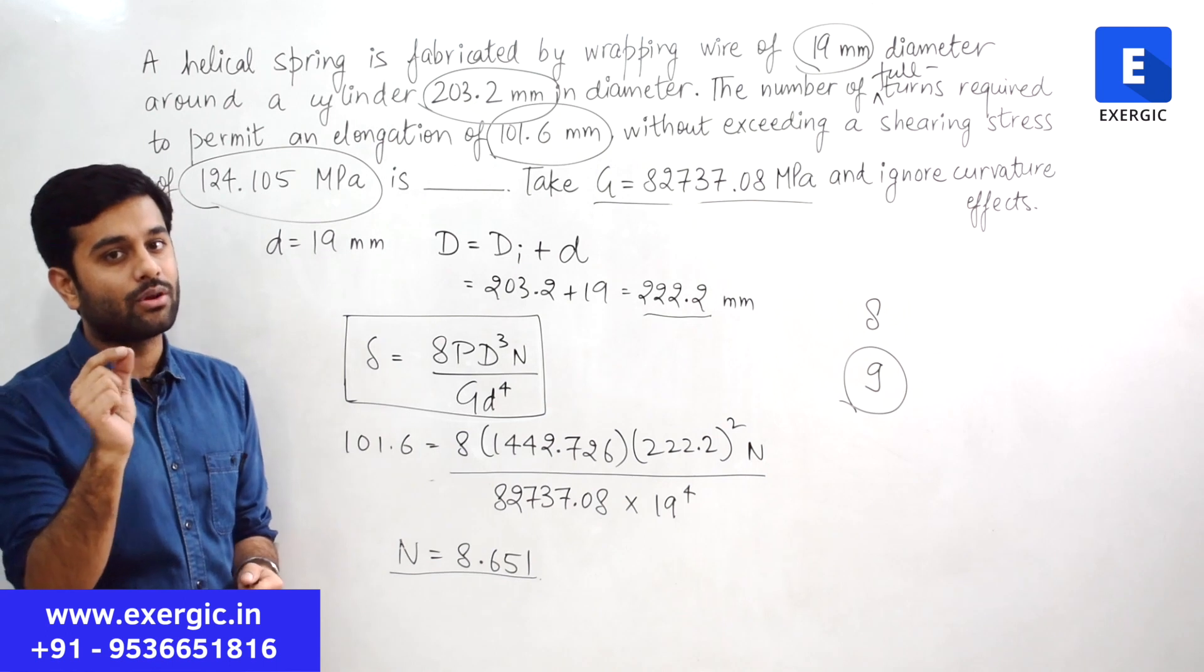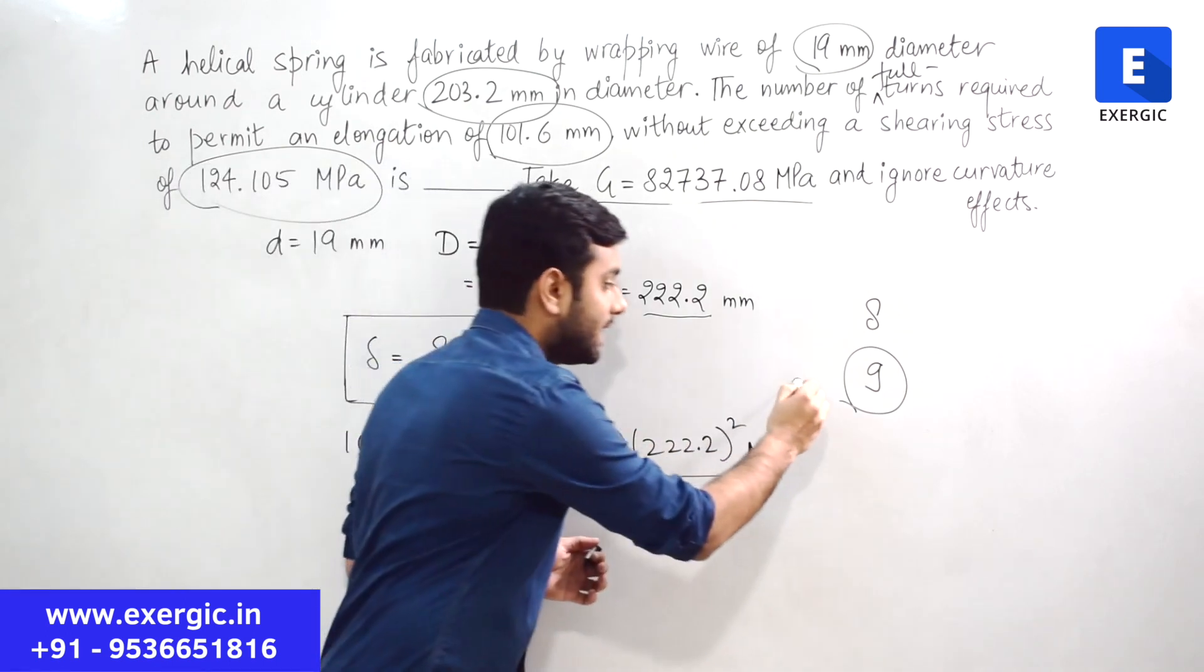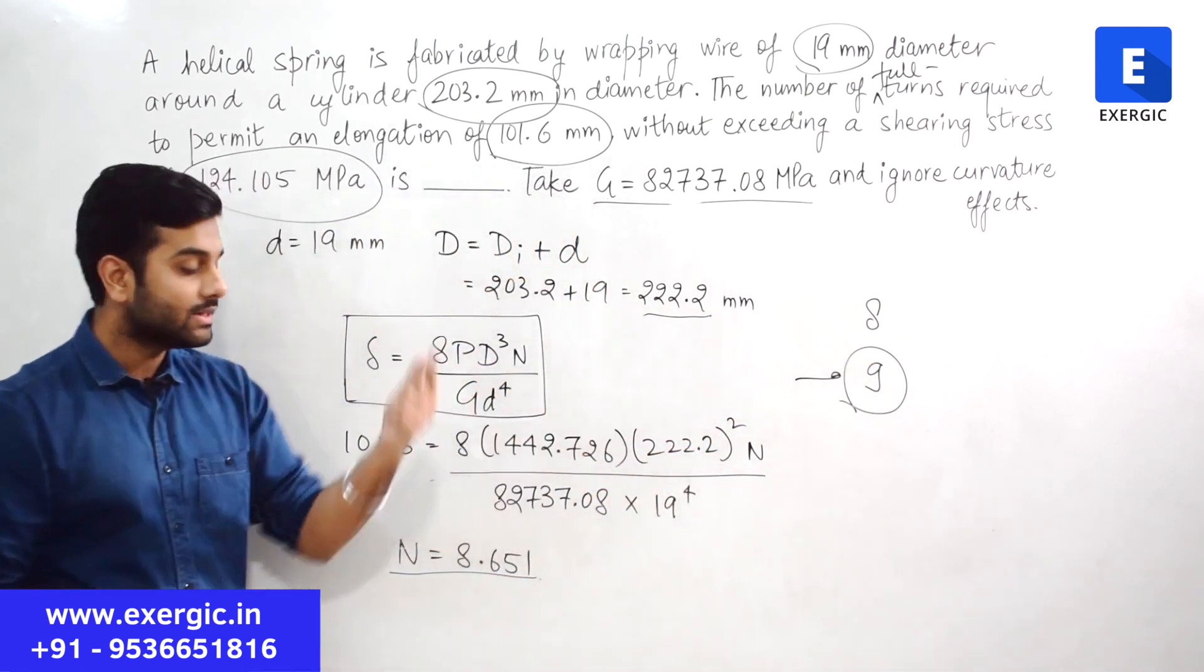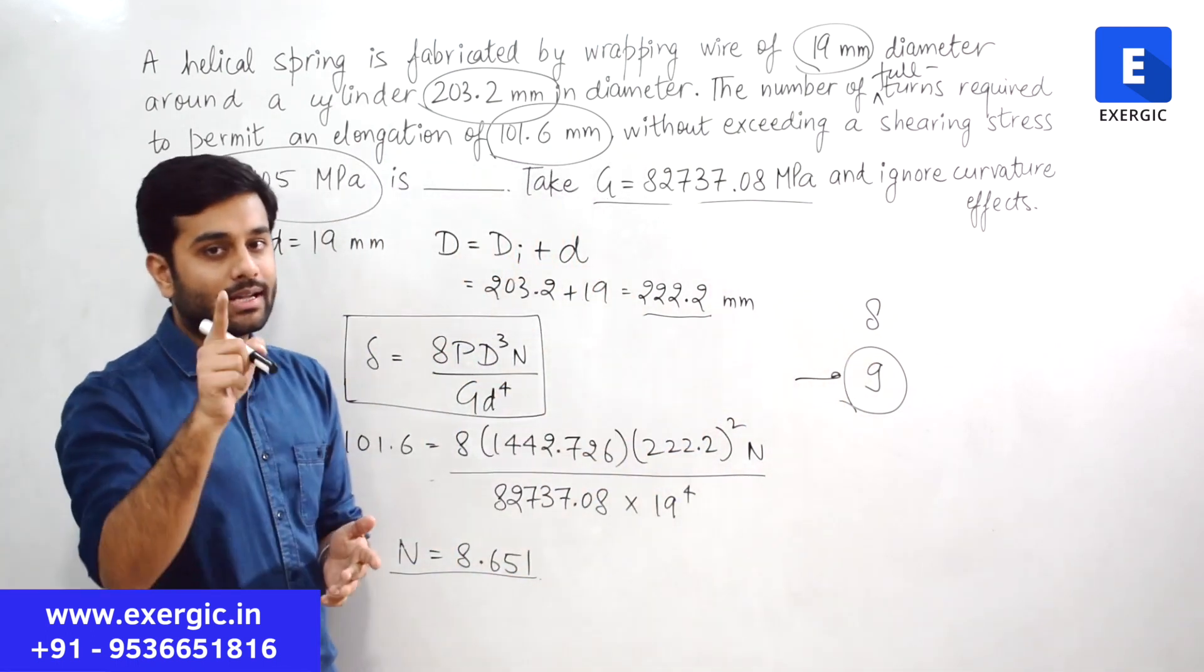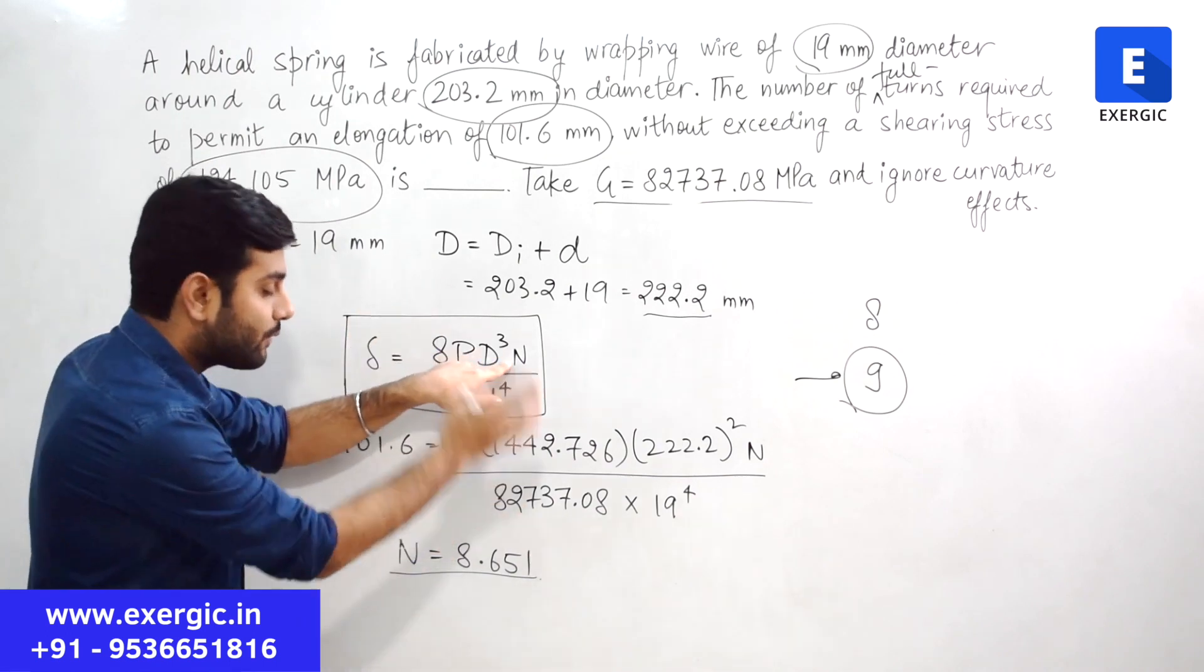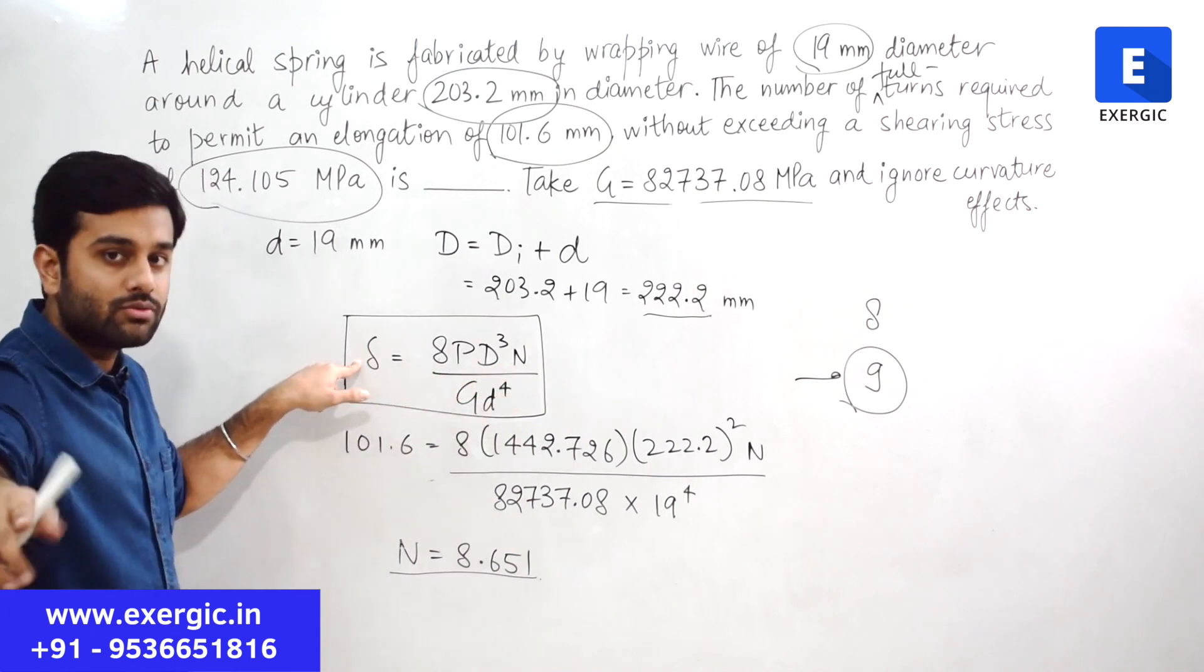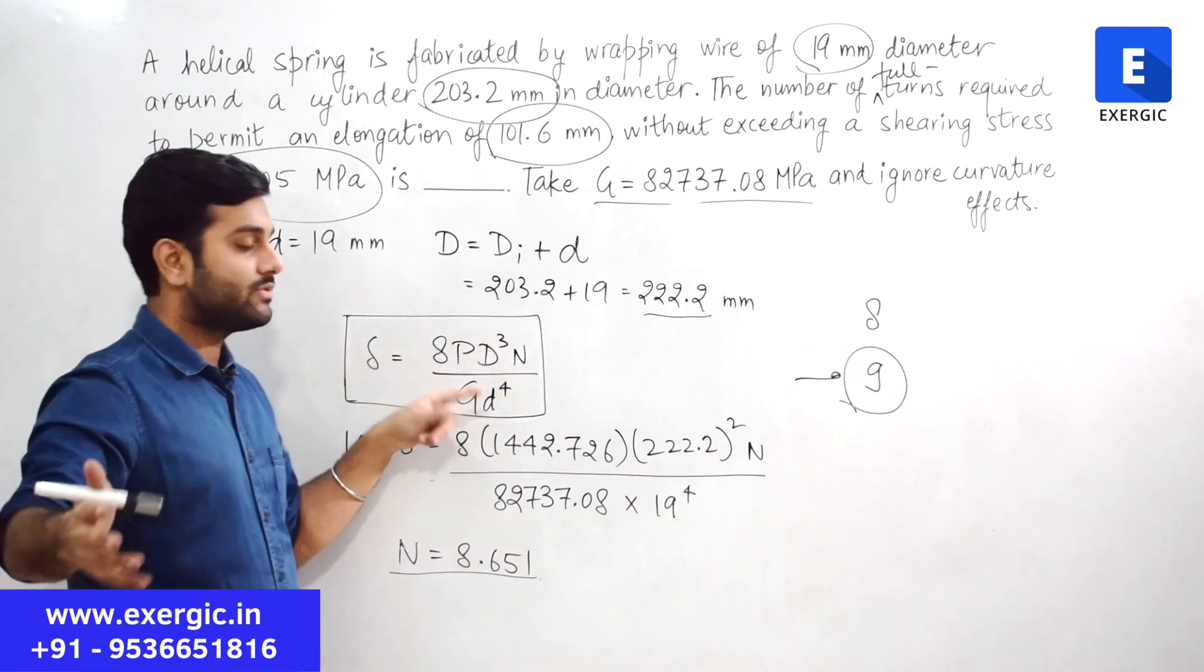But have a look here. If you increase the number of turns from 8.651, if you chose the value of 9, basically this value is more than 8.651. What are you telling? You are telling that the value of N has been increased from 8.651, which means the value of del will also increase.